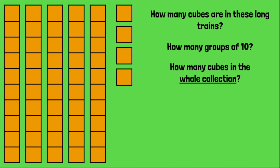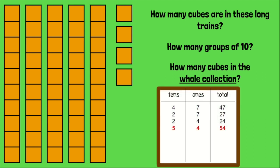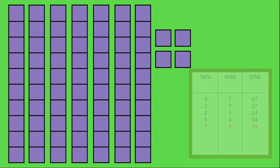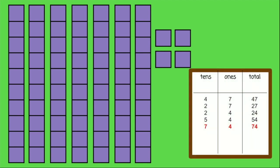How many cubes in this whole collection? Yes, five tens, four ones, for a total of 54. We can count them: ten, twenty, thirty, forty, fifty, fifty-one, fifty-two, fifty-three, and fifty-four. Great job. Try this one — write it on your board. Did you get seven tens, four ones, and seventy-four? High five.